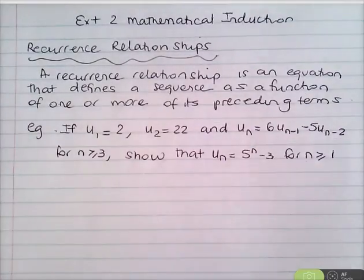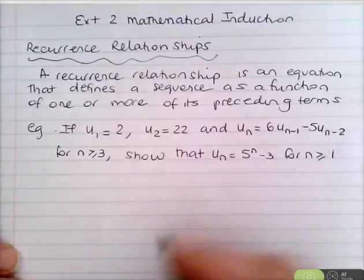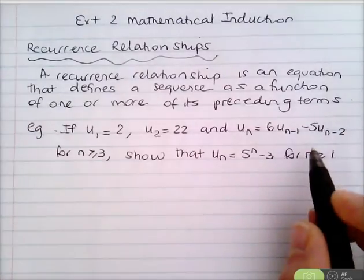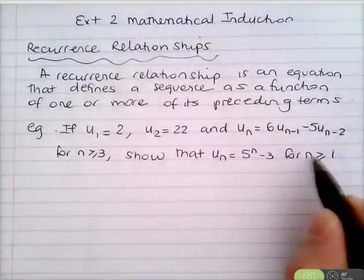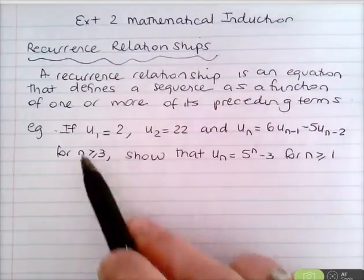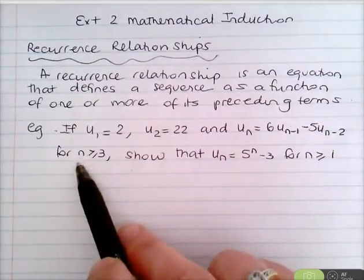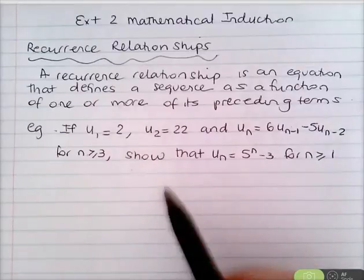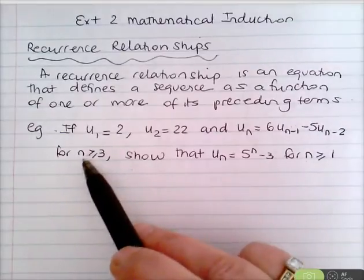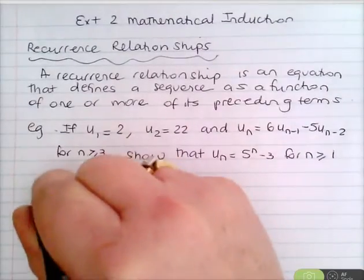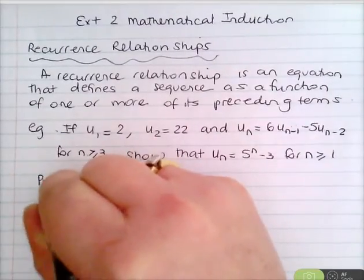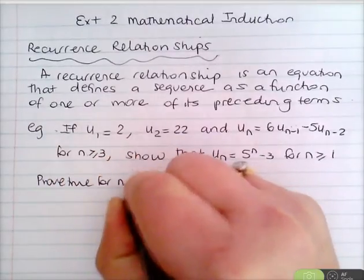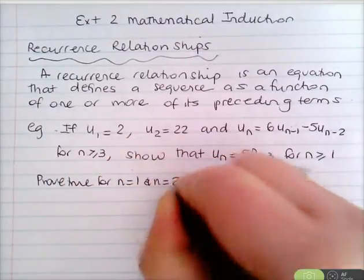In Step 1 we need to prove true not only for n = 1 but also for n = 2, because the recurrence relation does not come into play until n ≥ 3. So first we prove true for n = 1 and n = 2.